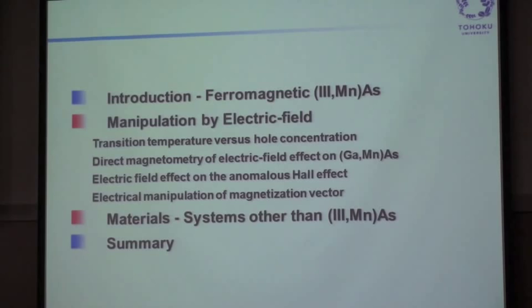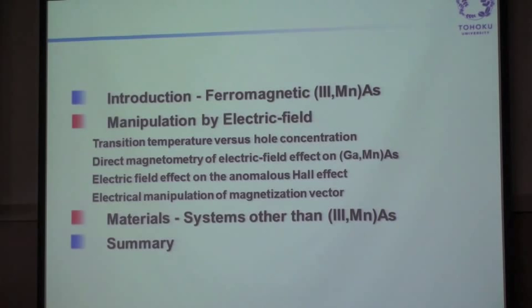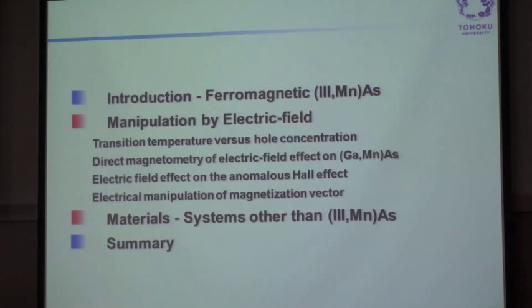This includes transition temperature versus hole concentration. We did direct magnetometry of electric field effects on ferromagnetic semiconductors, and similarly the effect on the anomalous Hall effect, and also electrical manipulation of the magnetization vector, which extends beyond ferromagnetic semiconductors into metals. If I have enough time, I will also discuss materials other than those III-V-based ferromagnetic semiconductors that I focus on in the first half of my talk.